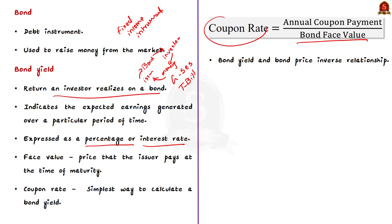For example, if a bond has a face value of rupees 1000 and the interest rate is rupees 100 per year, then its coupon rate is 10 percent. The bond yield and bond price have an important but inverse relationship: when the bond price is lower than the face value, the bond yield is higher than the coupon rate; when the bond price is higher than the face value, the bond yield is lower than the coupon rate.